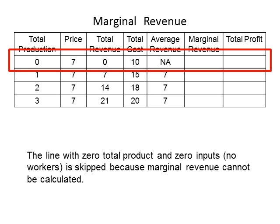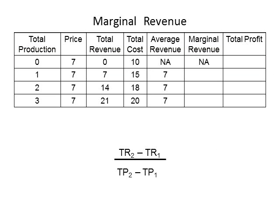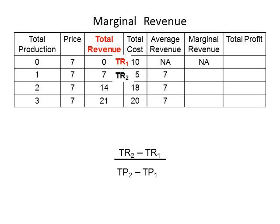Let's move on to the next row where the firm produces one printer. The first step is to write down the formula: (TR2 minus TR1) divided by (TP2 minus TP1). Once you've written down the formula, you will need to choose TR1, TR2, TP2, and TP1. Locate the second row of numbers in the total revenue column and write TR2 next to it. Next, locate the first row of numbers in the total revenue column and write TR1 next to it.